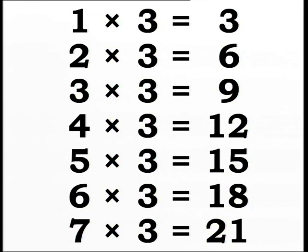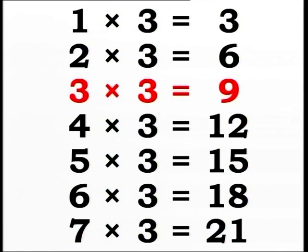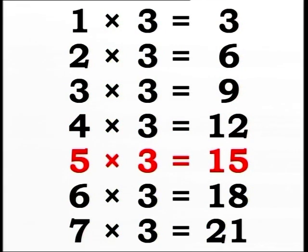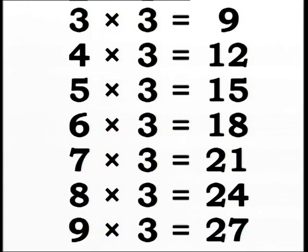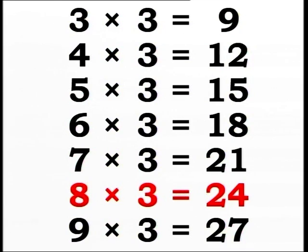Now, let's multiply by three, four, and five. One multiply three equals three. Two multiply three equals six. Three multiply three equals nine. Four multiply three equals twelve. Five multiply three equals fifteen. Six multiply three equals eighteen. Seven multiply three equals twenty-one. Eight multiply three equals twenty-four. Nine multiply three equals twenty-seven.